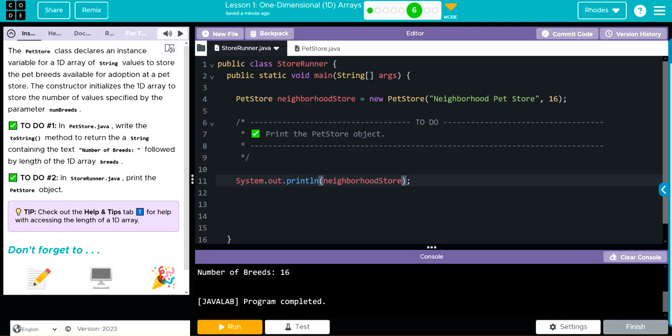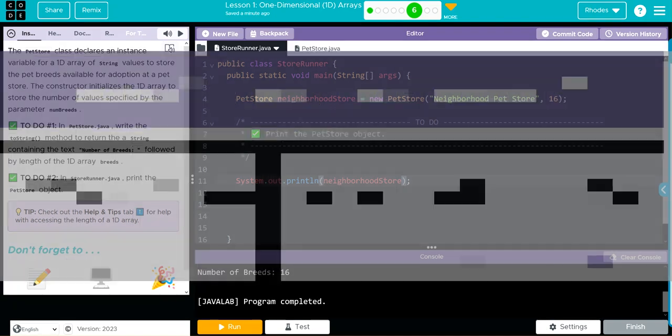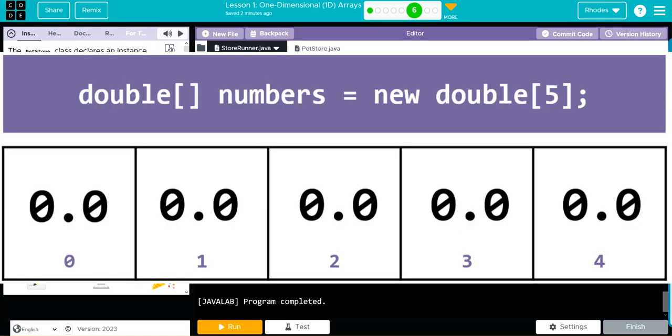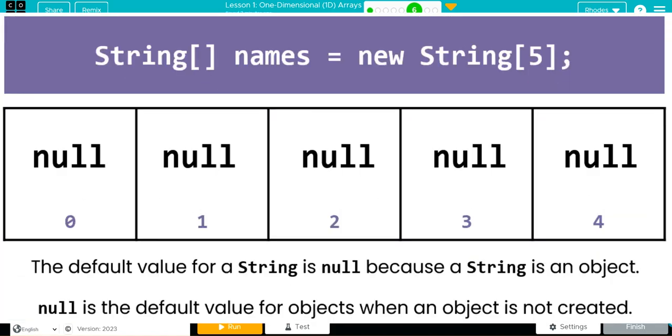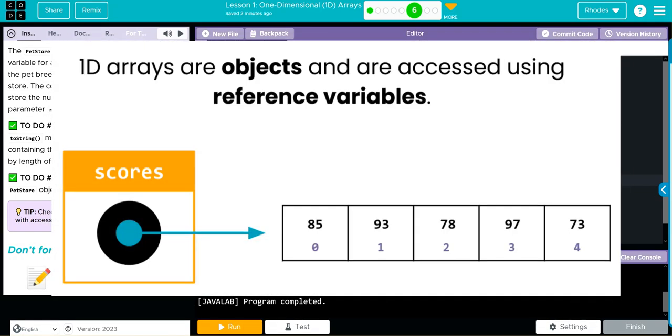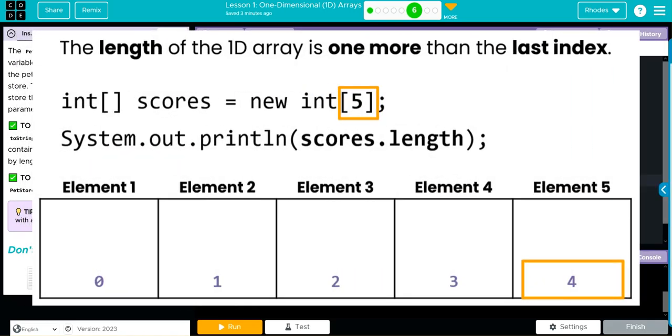For booleans it's false, for ints it's integer zero, for doubles it's 0.0, and for strings it says null. A 1D array is a reference object, and because it's an object, it's a reference type, meaning it references the location in memory where it's stored, not the actual values.